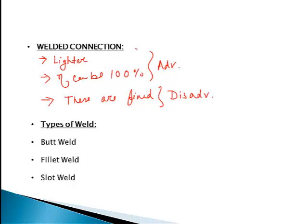The types of welds — mainly the types of welds we use are butt weld, fillet weld, and slot weld. There are other types of welds also, but these are the most important ones.